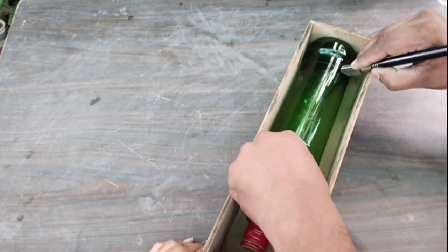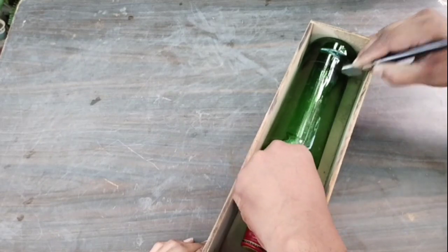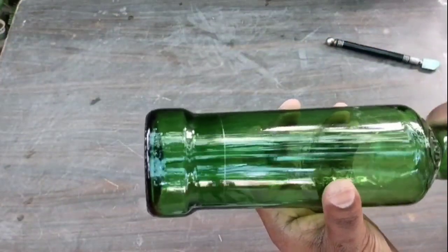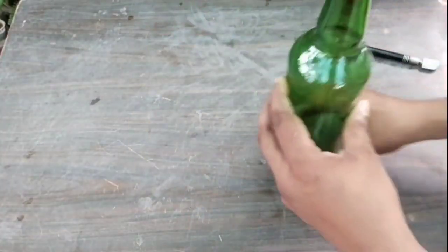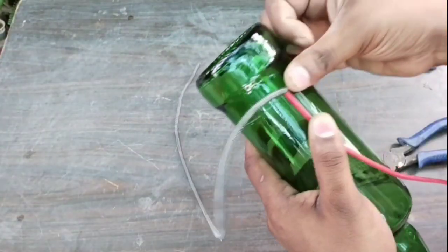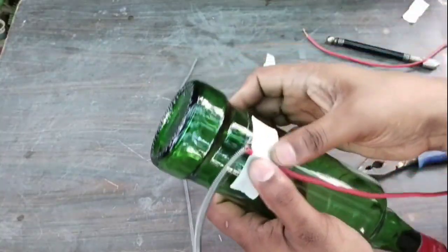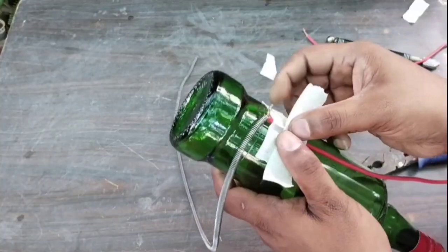Here we have changed the temperature of the bottle by using nichrome wire to cut the bottle. Here we have fixed the nichrome wire above the marking in this way.